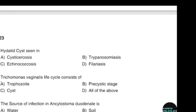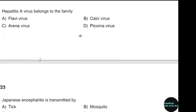Hydatid cysts are seen in — correct answer option C. Hepatitis A virus belongs to the family — correct answer option D: Picornaviridae.